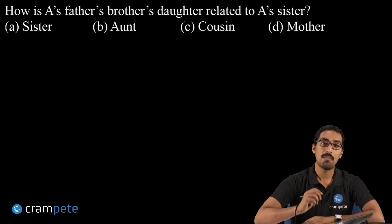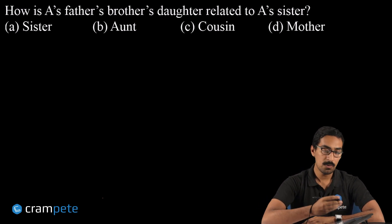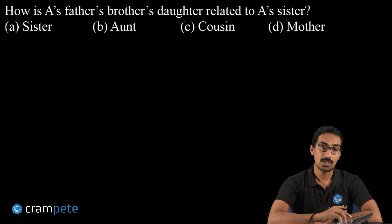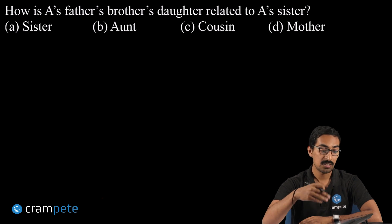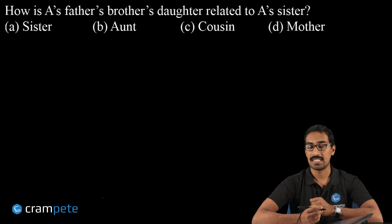Hi friends, let us solve a problem on blood relations. Let's read the question given: How is A's father's brother's daughter related to A's sister? So you start with A, but then you go to a lot of links—father, brother, then daughter—and related to A's sister, not just A.